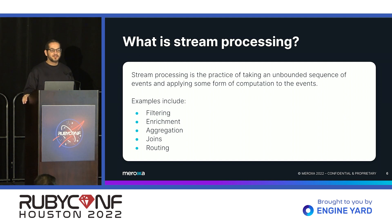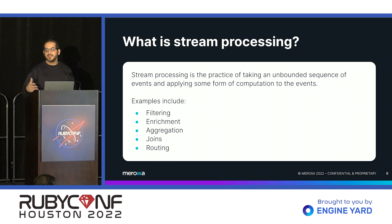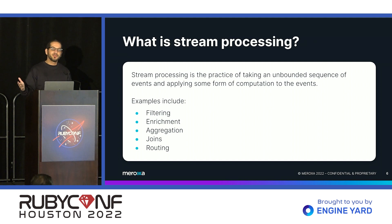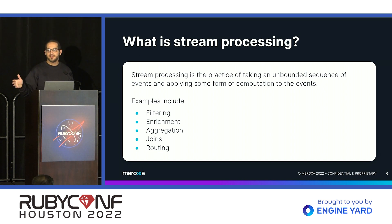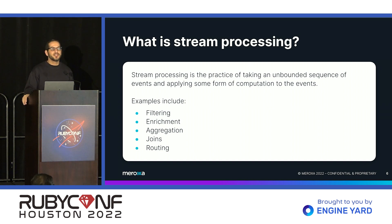Some examples of stream processing: filtering, where you get a number of events and want to drop some of them; enrichment, where you take each event and augment it with additional information; aggregation, where you do processing across a number of events — maybe count them, sum them; joins, similar to a SQL join where you mash two sets of data together by some common element; and routing, where you want some events to go one place and others somewhere else.